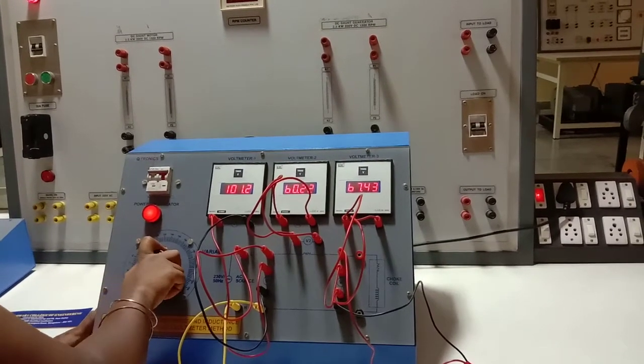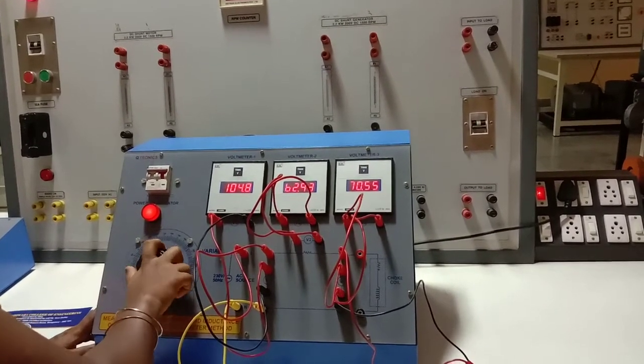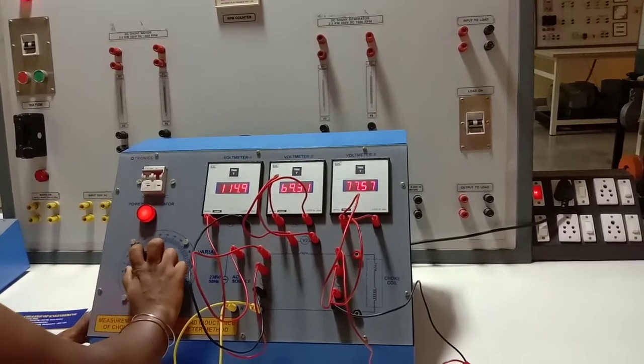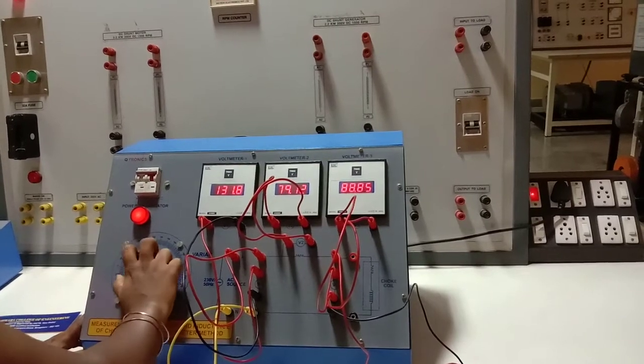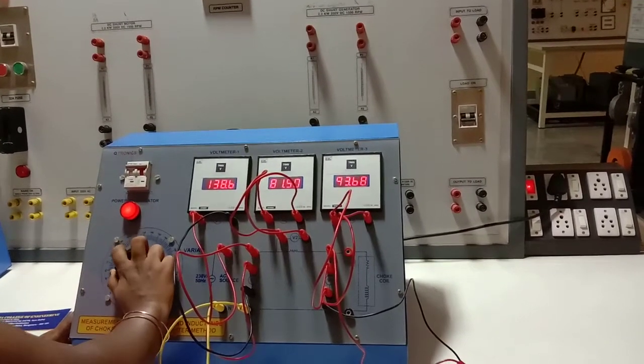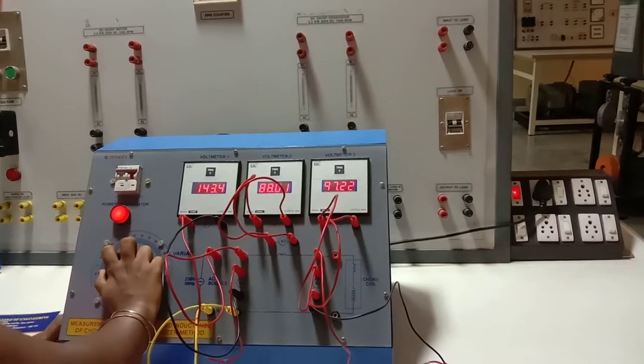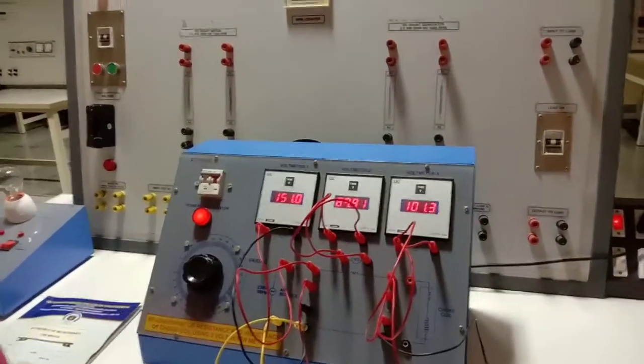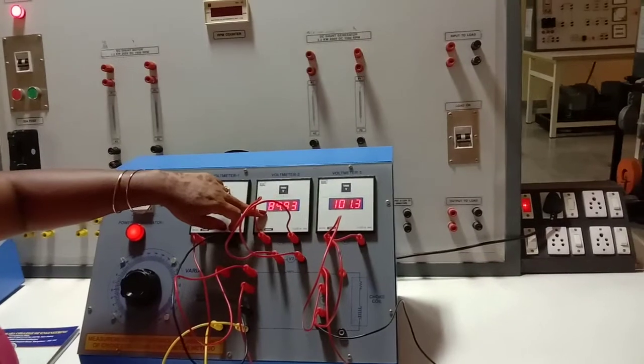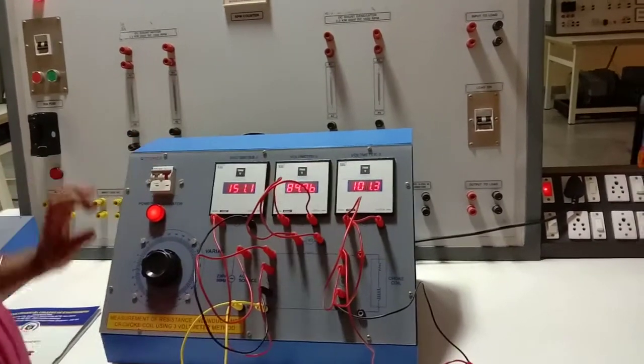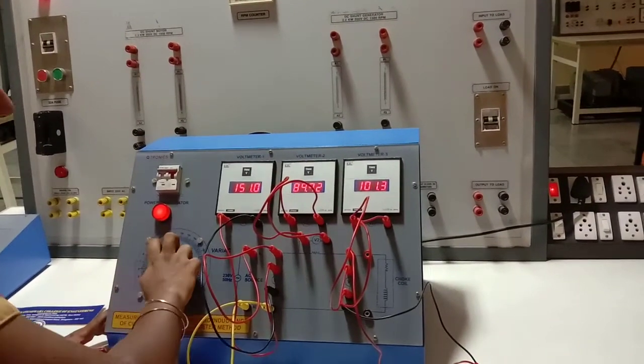Then we will go to the third one, 150. So exactly I got 150. So for 151, again we are getting a value V2 as 89, V3 as 101.